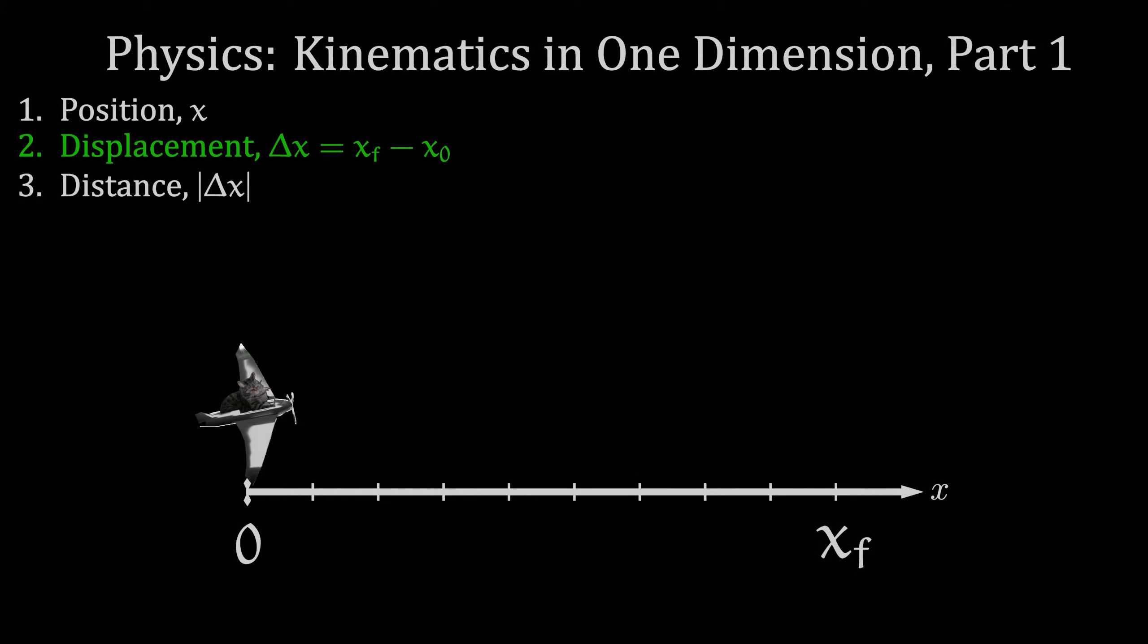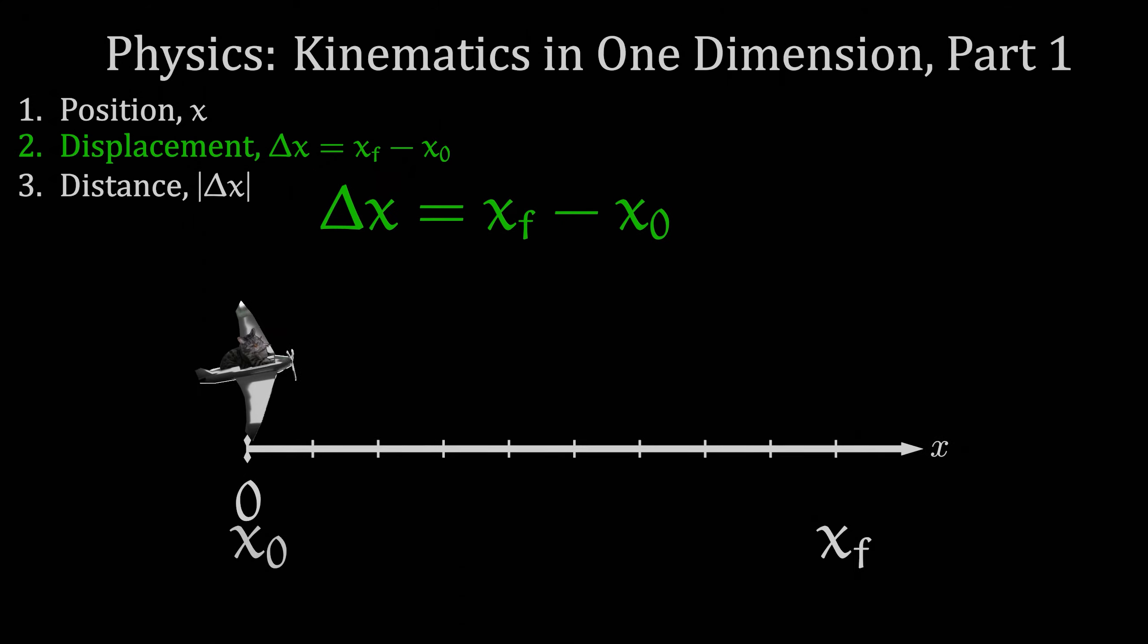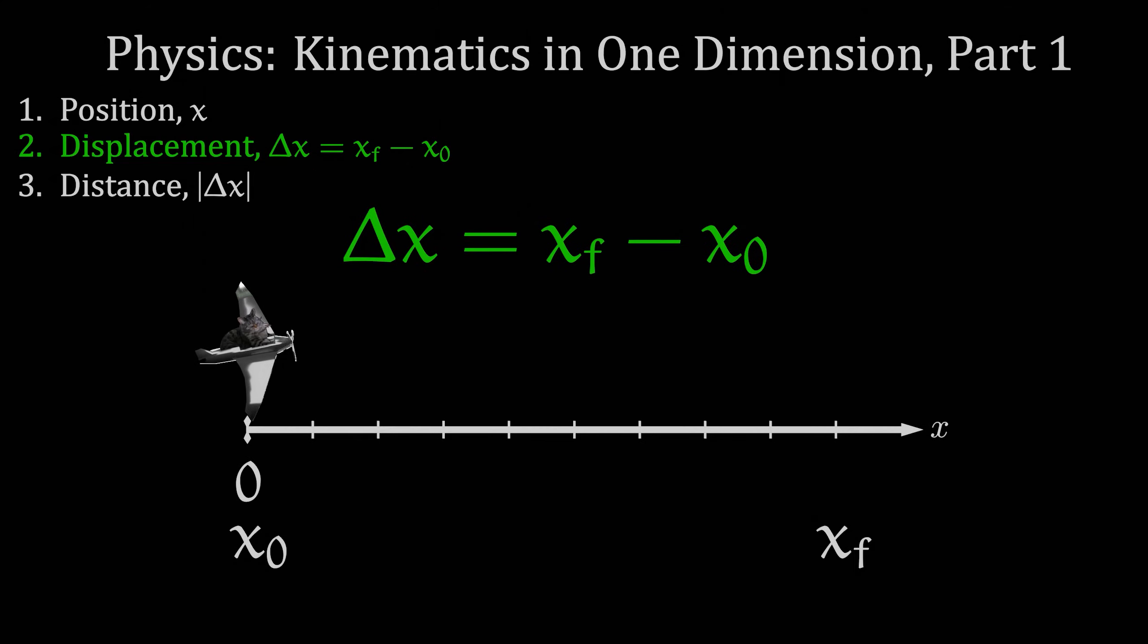Displacement delta x is defined as the final position x sub f minus the initial position x0 or x sub zero. Let's do an example to understand displacement.